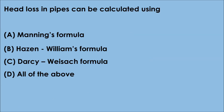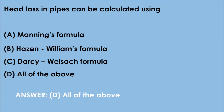Question 9. Head loss in pipes can be calculated using: A. Manning's formula, B. Hazen-Williams formula, D. All of the above. The correct answer is option D — all of the above. Head loss in a pipe can be calculated using Manning's formula, Hazen-Williams formula, and also by the Darcy-Weisbach formula.